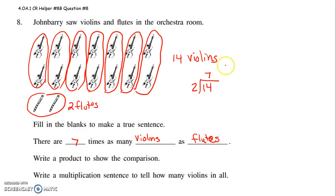Write a product to show this comparison. Okay, I wrote a division. So you would do 7 times 2 equals 14. Write a multiplication sentence that tells how many violins in all. Hmm. This is like the same question to me. Multiplication sentence.